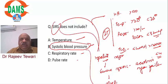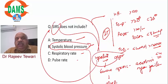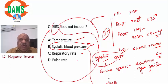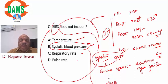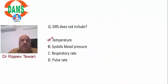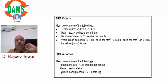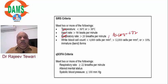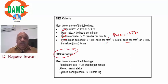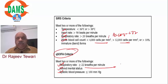SIRS can occur with or without infection (e.g., pancreatitis without infection). QSOFA (quick SOFA) has only three parameters: respiratory rate, altered mental status (GCS ≤14), and systolic blood pressure. Two of three positive = high risk for sepsis. QSOFA is frequently asked in INICT exams.